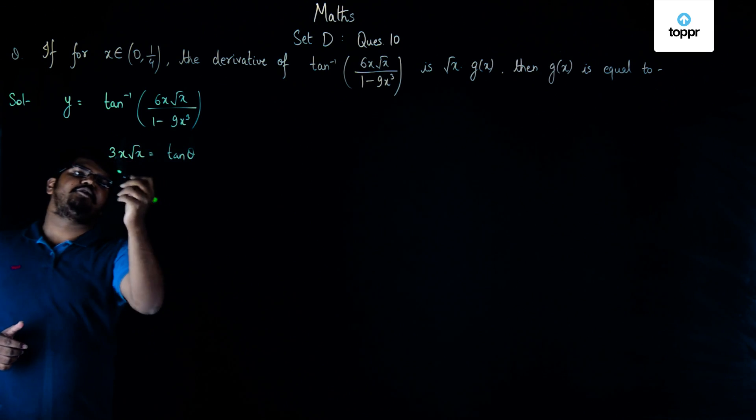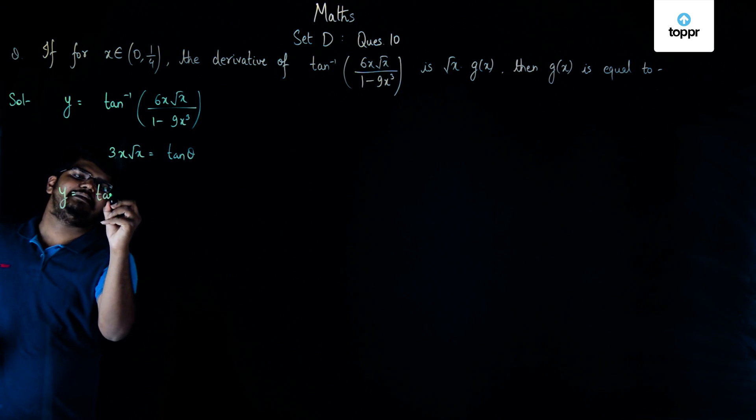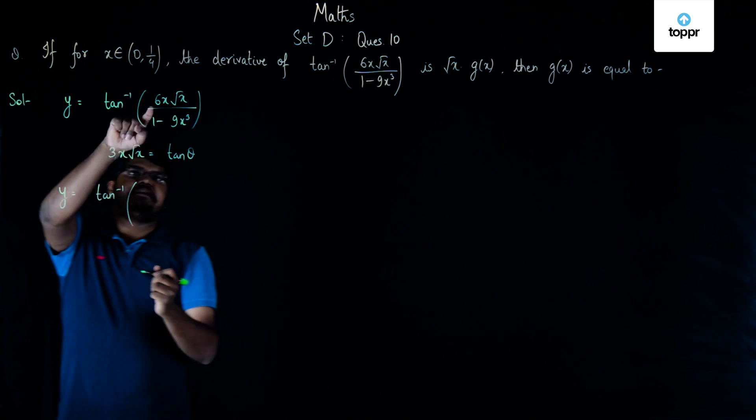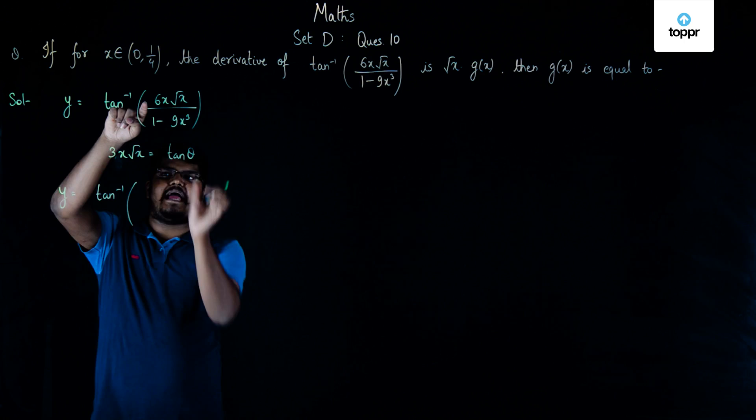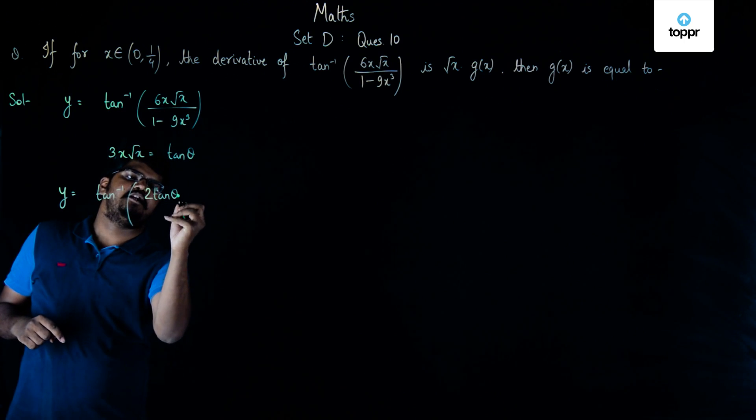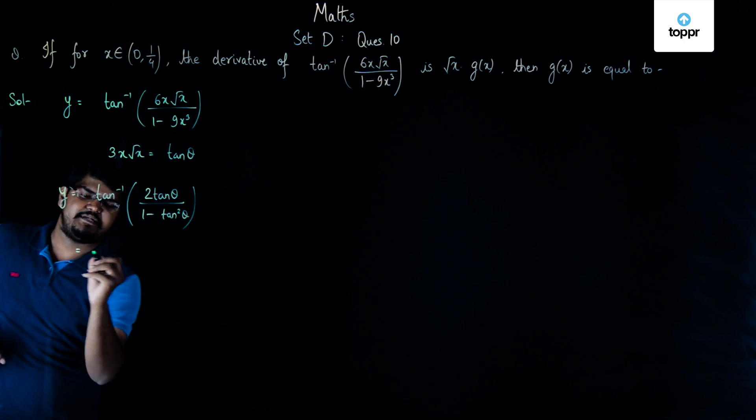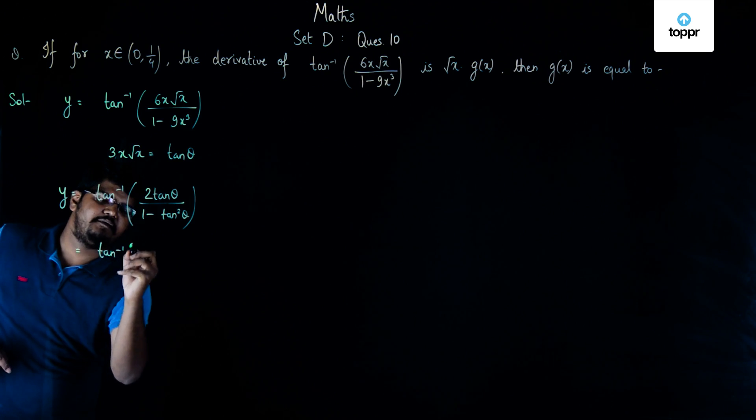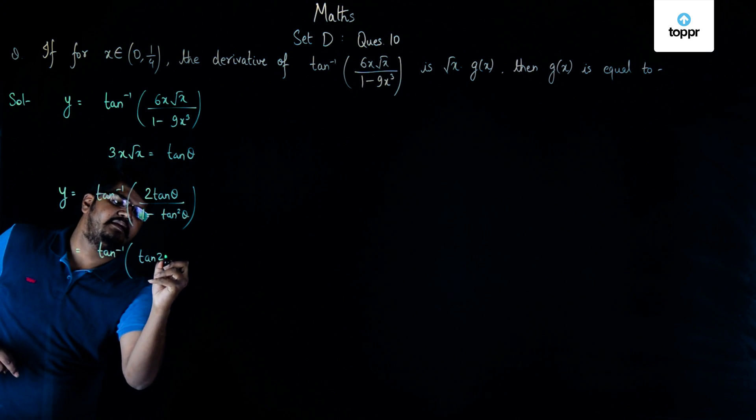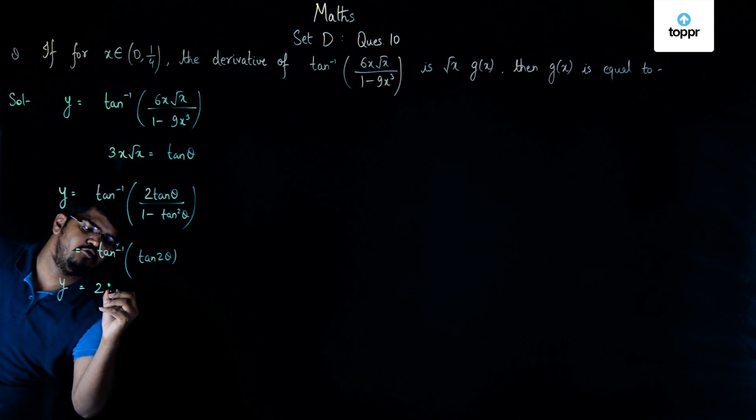Now if we put 3x√x as tan θ, the given function will become y = tan inverse. 6x√x can be written as 2 times 3x√x, that is 2 tan θ. And in the denominator we will have 1 - tan² θ. So this will become tan inverse of tan 2θ, and so the final value of y will be equal to 2θ.